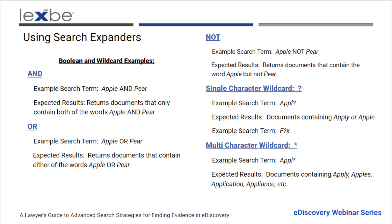These Boolean modifiers that we're looking at here — these are the AND, OR, and NOT. These are the most common Boolean modifiers that you see, and the examples of how those work are here. 'Apple AND pear' would only give you a document that contained both of those words. An OR situation would return documents that contain the words apple or pear. And then 'NOT pear' is going to give you the documents that only have the word apple and not the word pear.